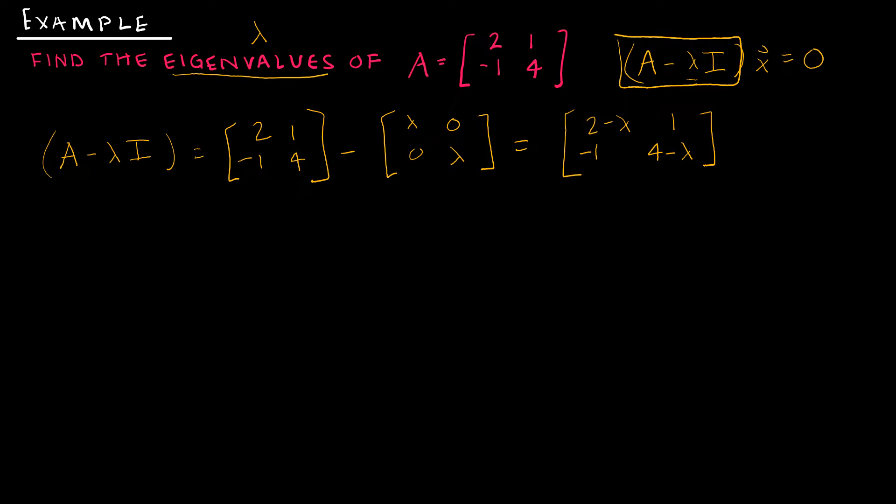What I want is, again looking for the non-trivial solutions, I'm trying to find where this matrix is not invertible. And when that matrix is not invertible by the invertible matrix theorem, one of the ways we know that is when the determinant is equal to zero, then it's not invertible. So I'm going to say I want zero to be the determinant of A minus lambda I, which means I need to find the determinant of... My lambdas are looking like X's, which is a problem. 2 minus lambda, 1, -1, 4 minus lambda. I'm looking for this determinant.